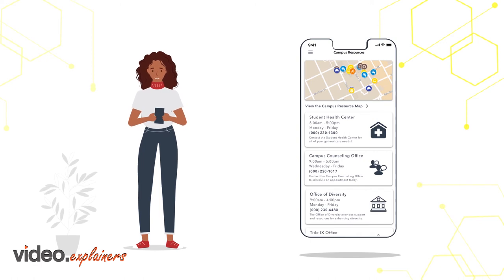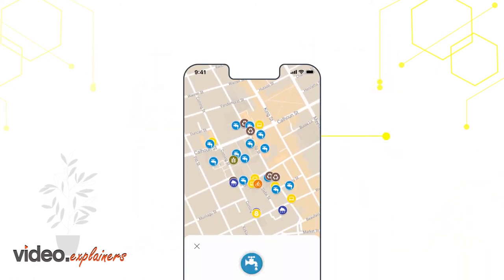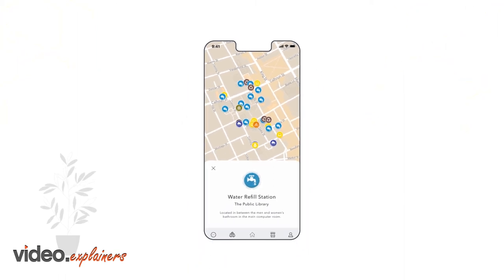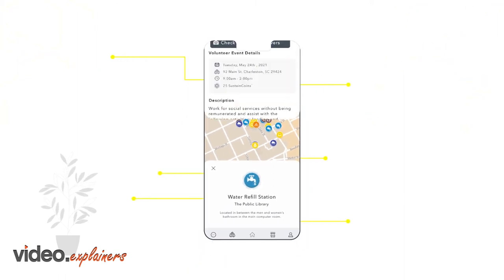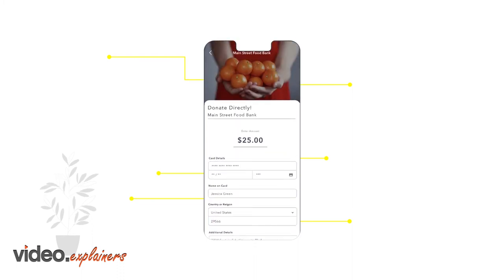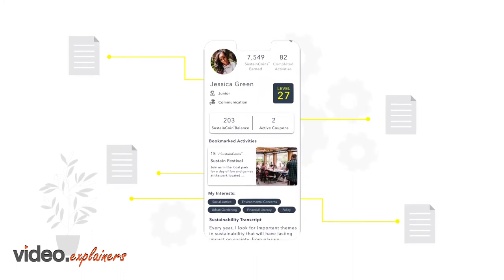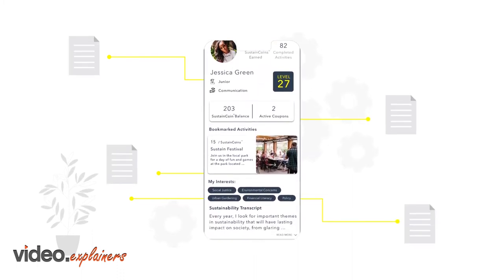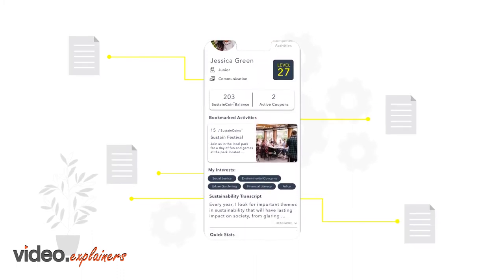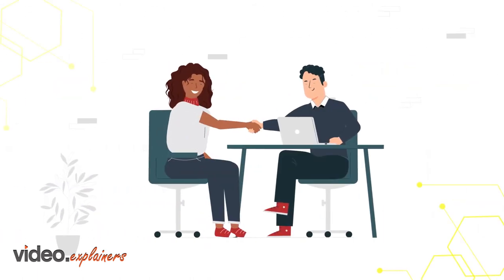Reduce stress with turn-by-turn directions and real-time location updates to events and campus infrastructure like water refill stations. Sustain App also compiles the data you generate from your verified volunteering, philanthropy, digital learning, or certifications into our proprietary sustainability transcript feature.